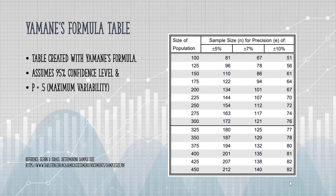Let's say you had a population of 400. At that 5% precision level, you would need quite a large sample of 201.